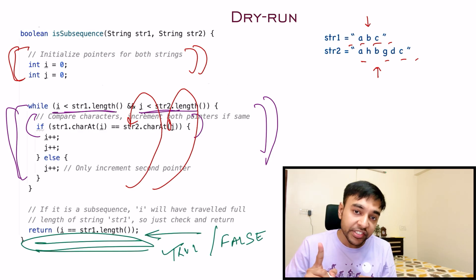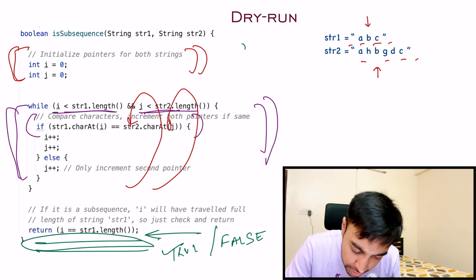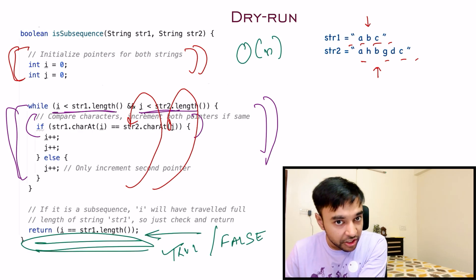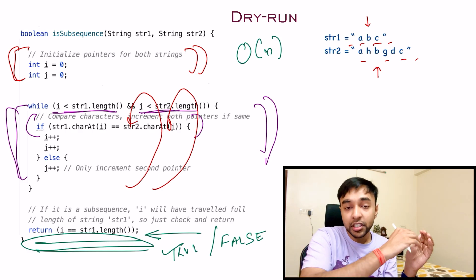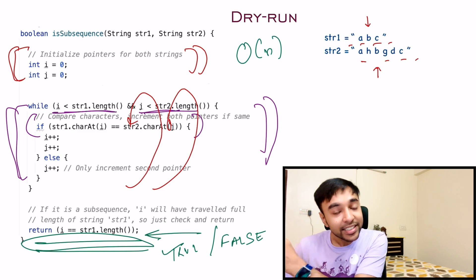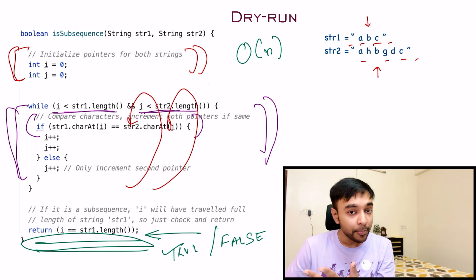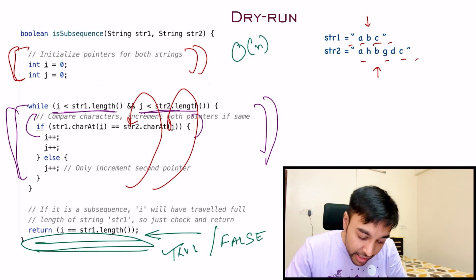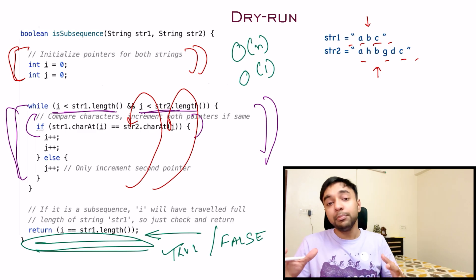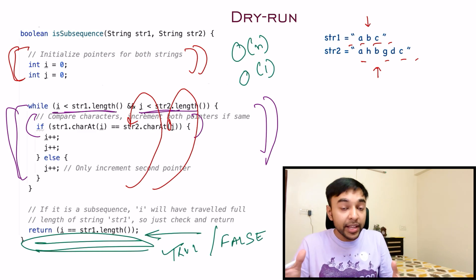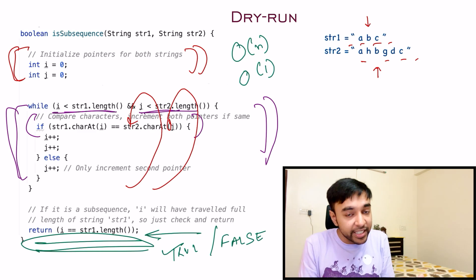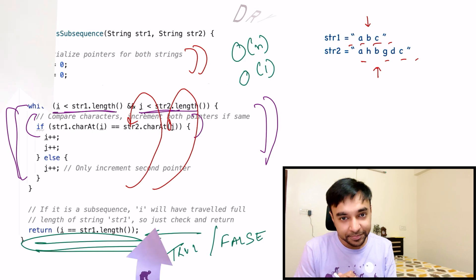The time complexity of this solution is O(n), where n is the length of the longer string, since you iterate the second string at least once. The space complexity is O(1) — constant space — because no extra space is used to arrive at the answer.